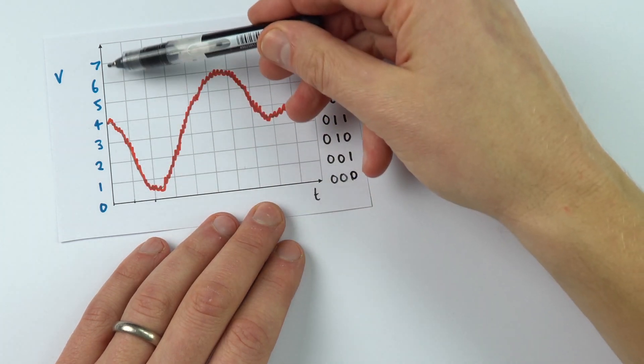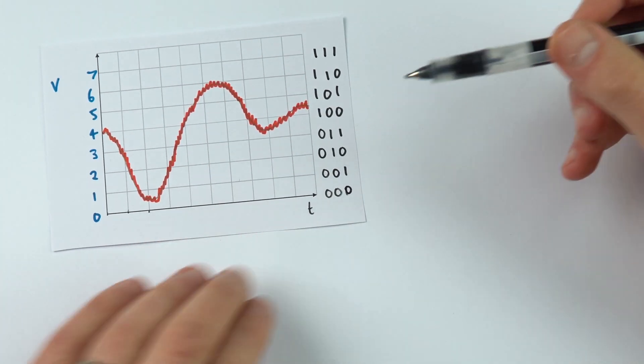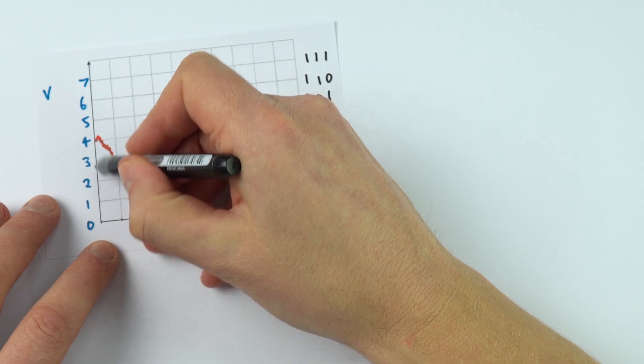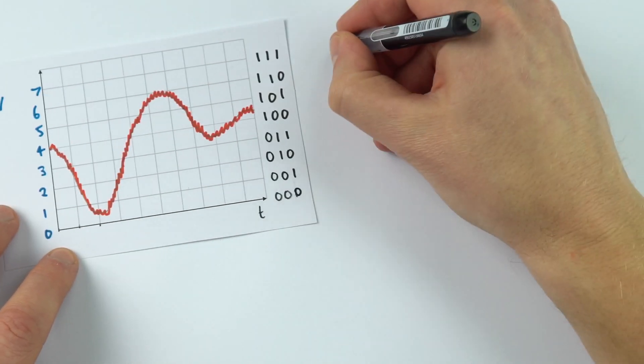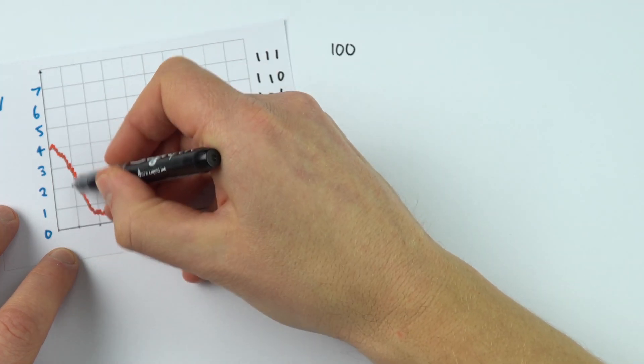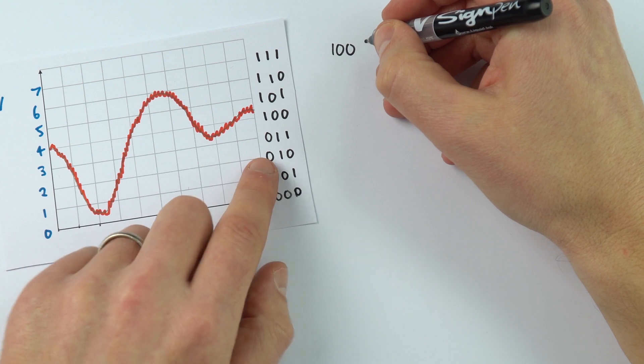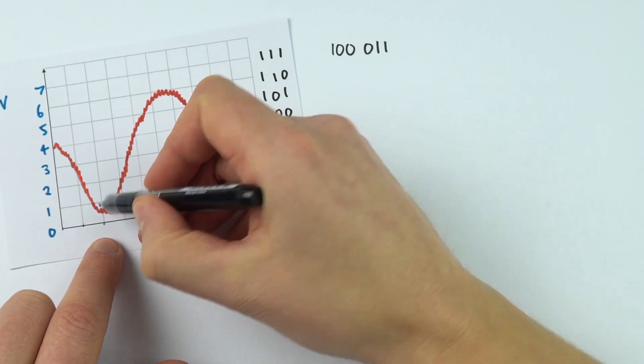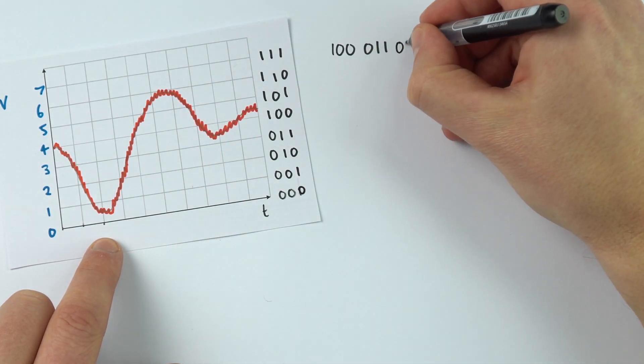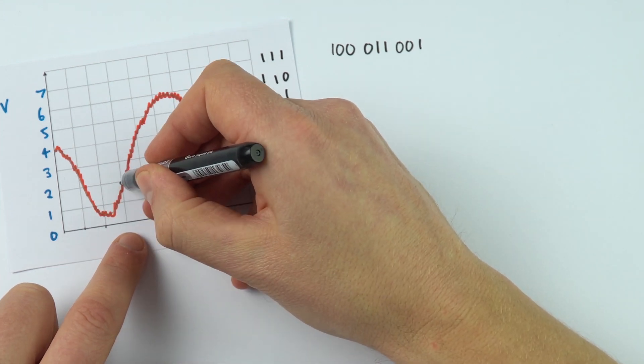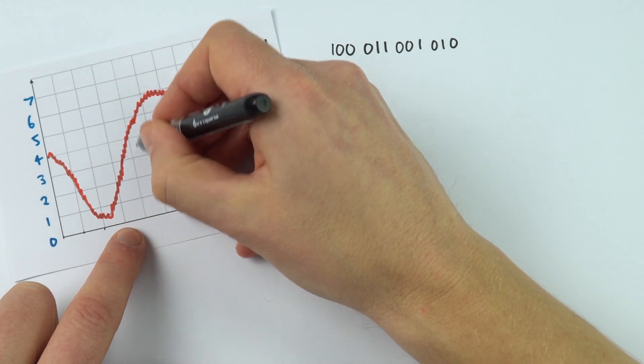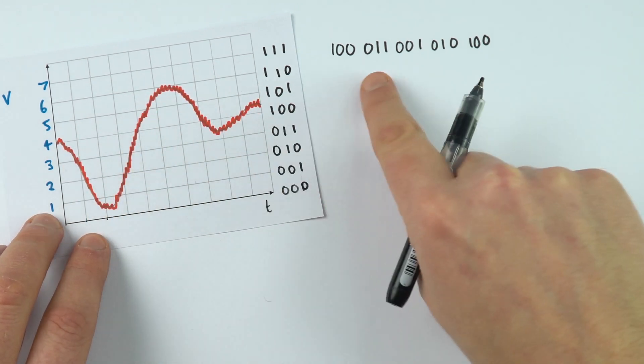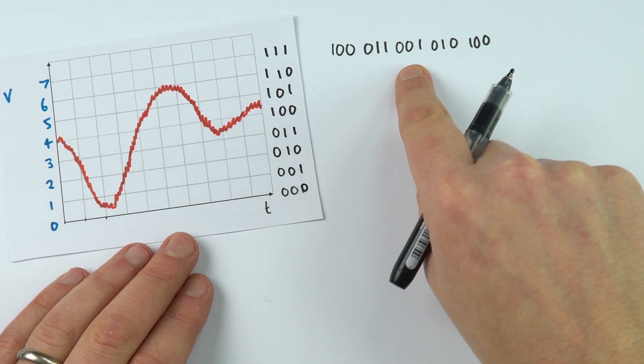Here we have these eight different values represented in binary and what we can do is start to sample the signal at regular time intervals. When we have this first interval the number is closest to four so that would be 100. At the next interval it's closest to three which is 011, then closest to one for the next one so that's 001, this one here is closest to 010. As we go along with the signal we're changing this analogue signal into a series of ones and zeros.